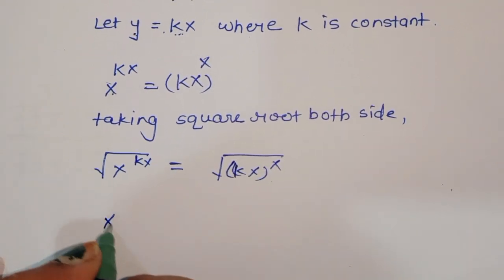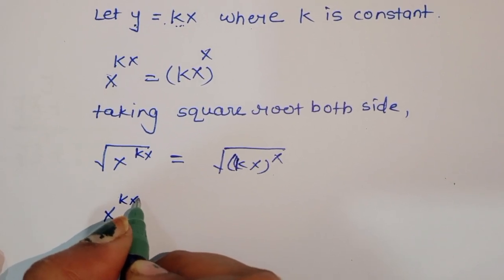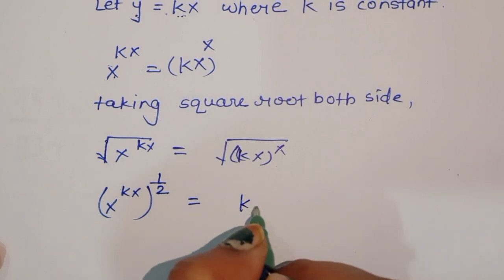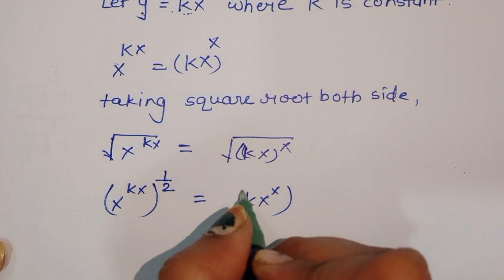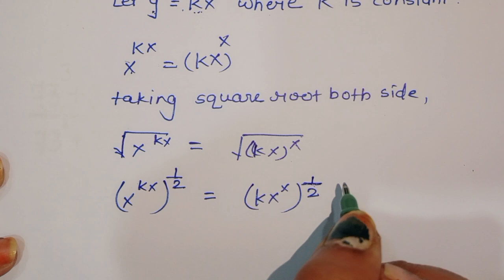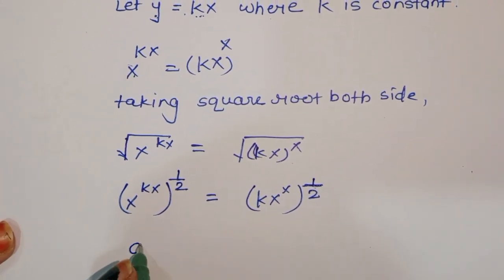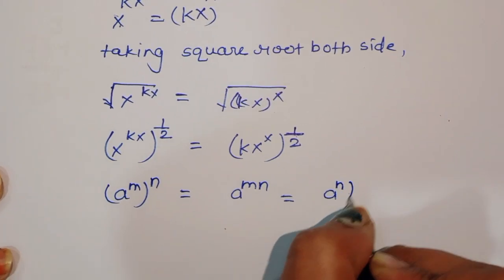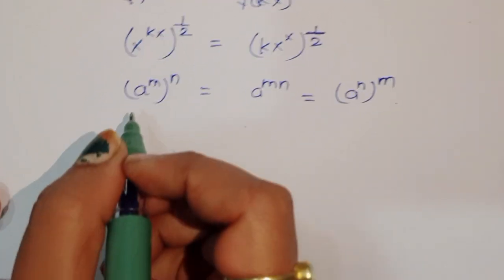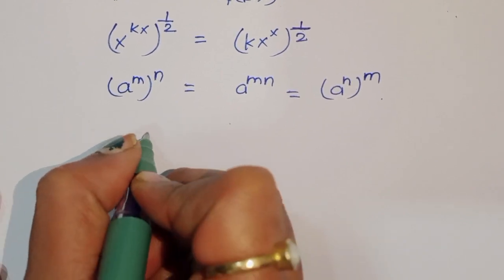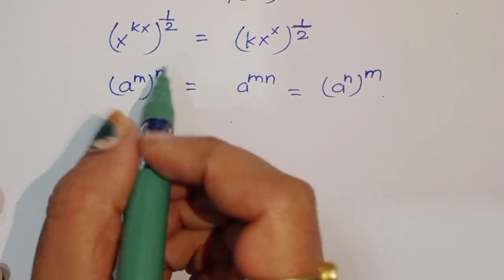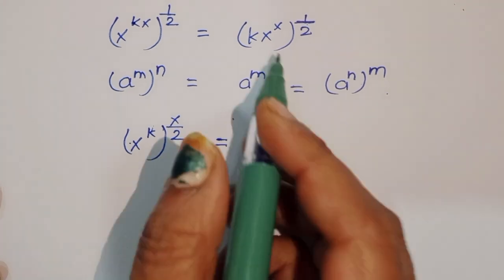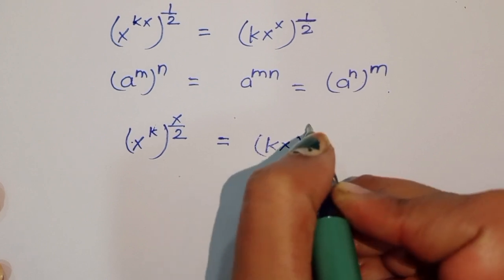We can write this as x^(kx) raised to 1/2 equals (kx)^x raised to 1/2. Using the formula (a^m)^n = a^(mn), we rewrite this as x^(x·k/2) equals (kx)^(x/2).